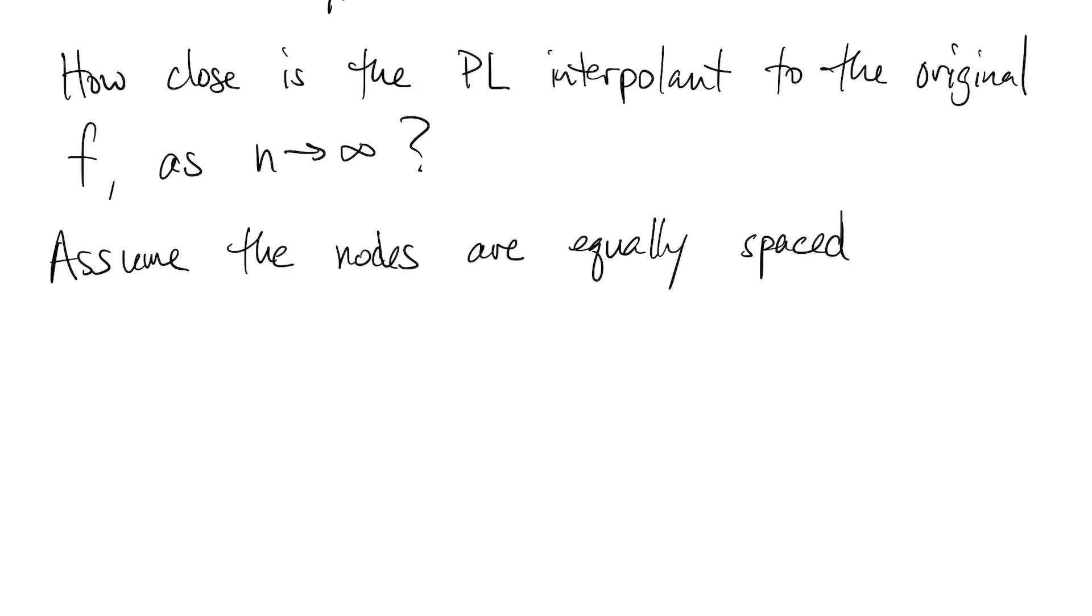The simplest case to think and talk about is when the nodes are equally spaced, separated by a distance h. So h must be proportional to 1 over n. Now the limit we seek, n going to infinity, is the same as h going to 0.